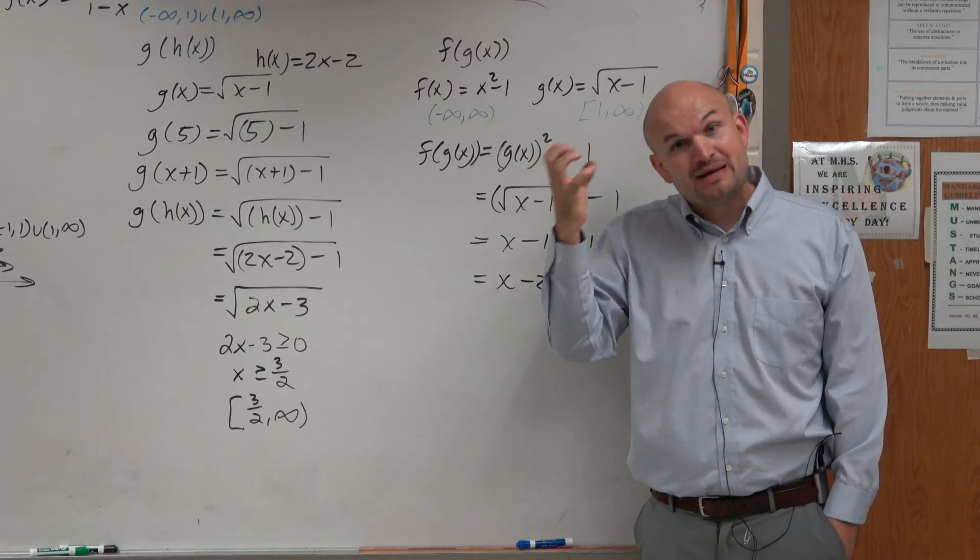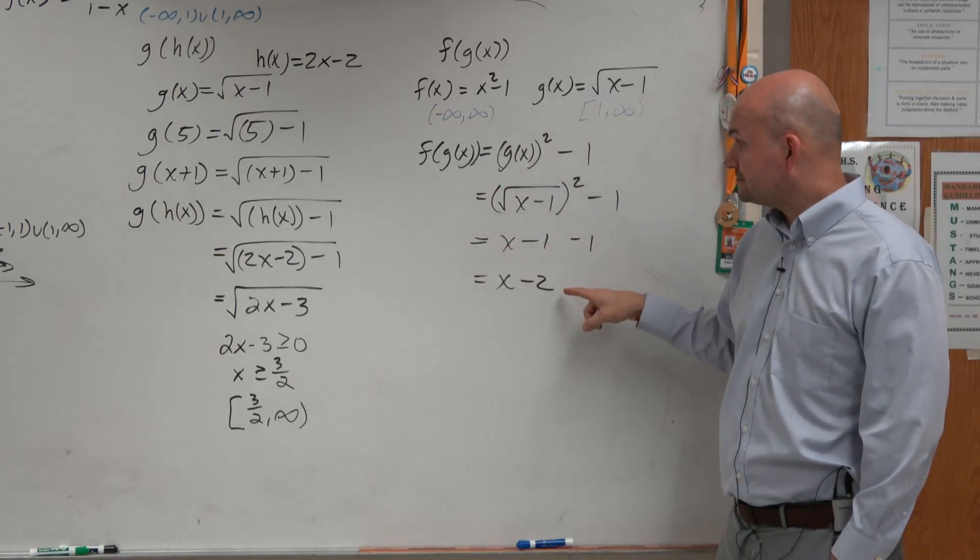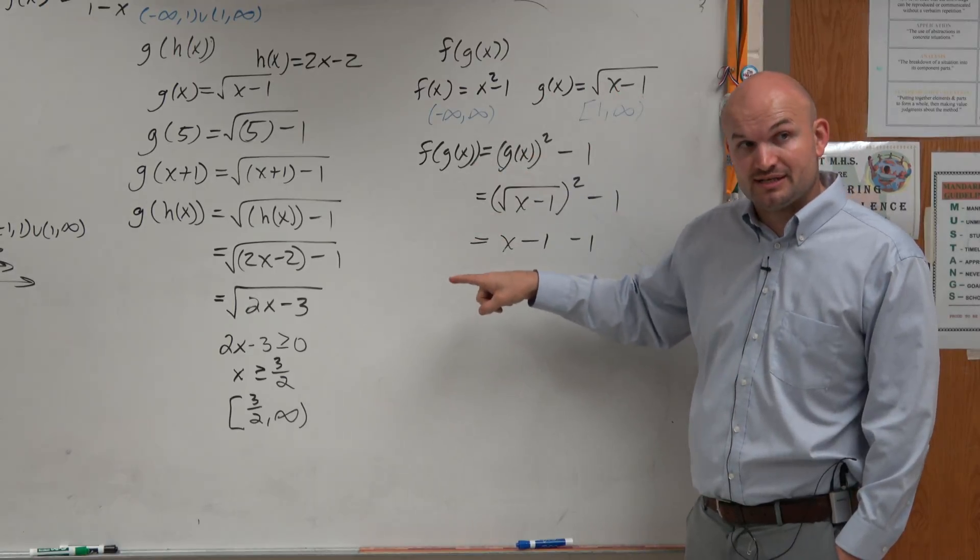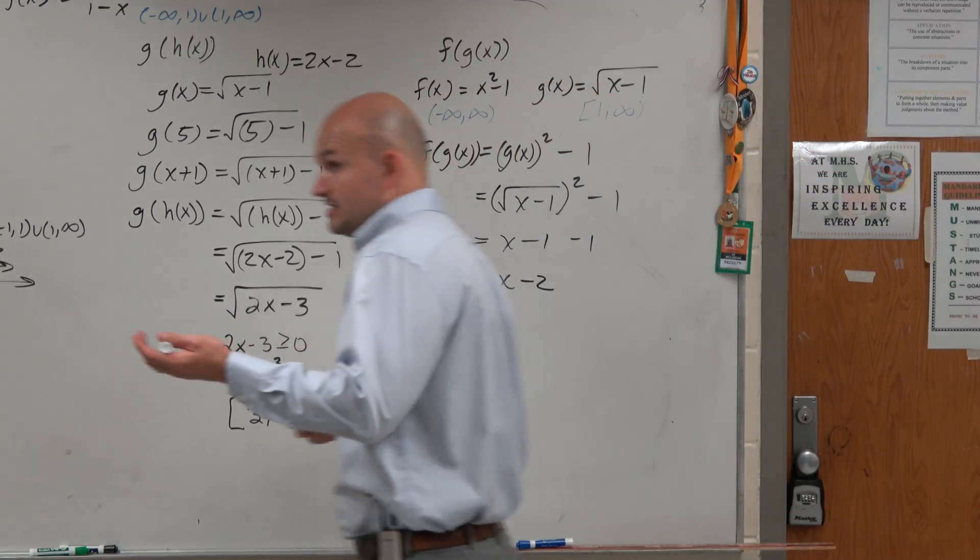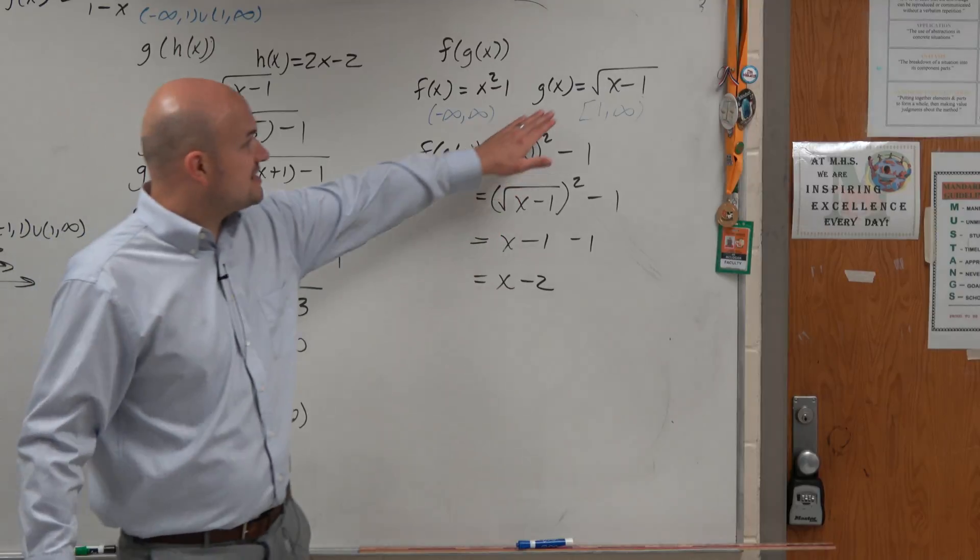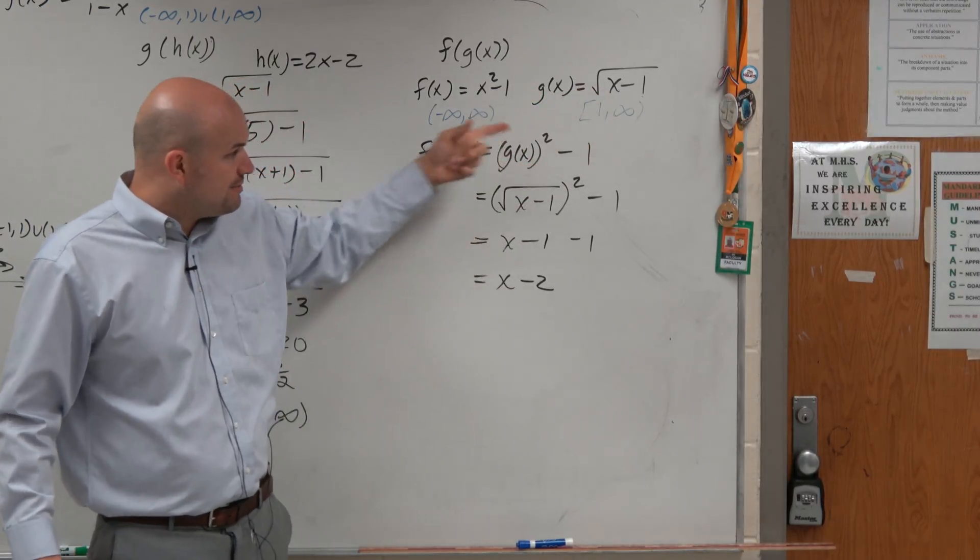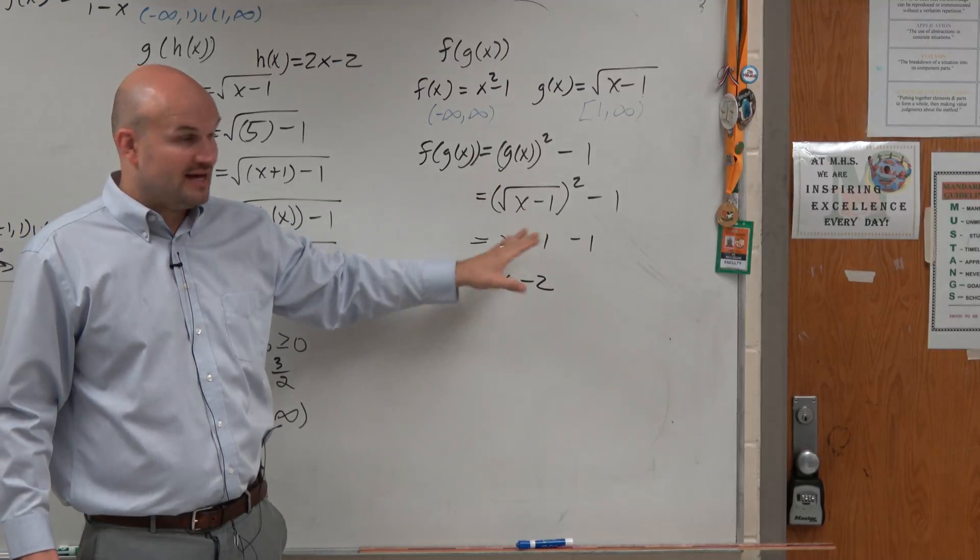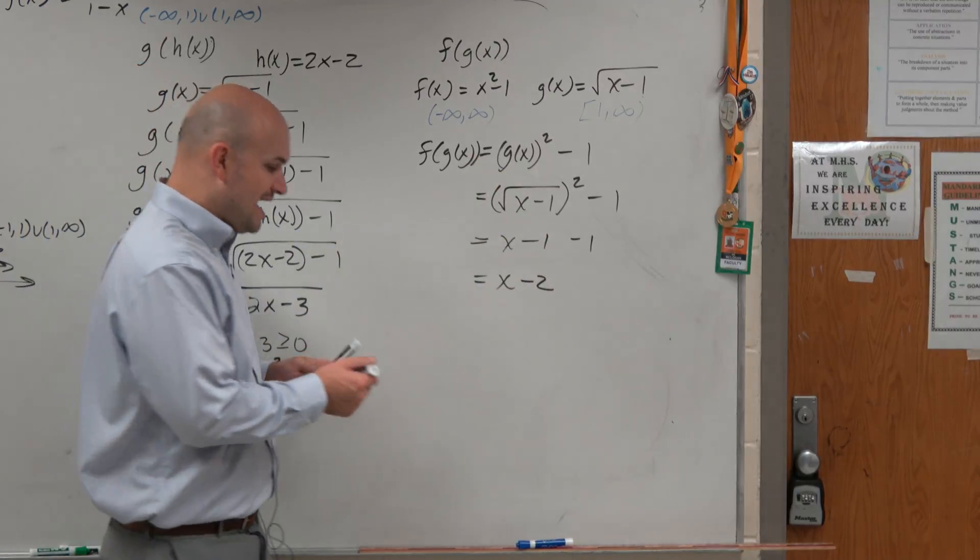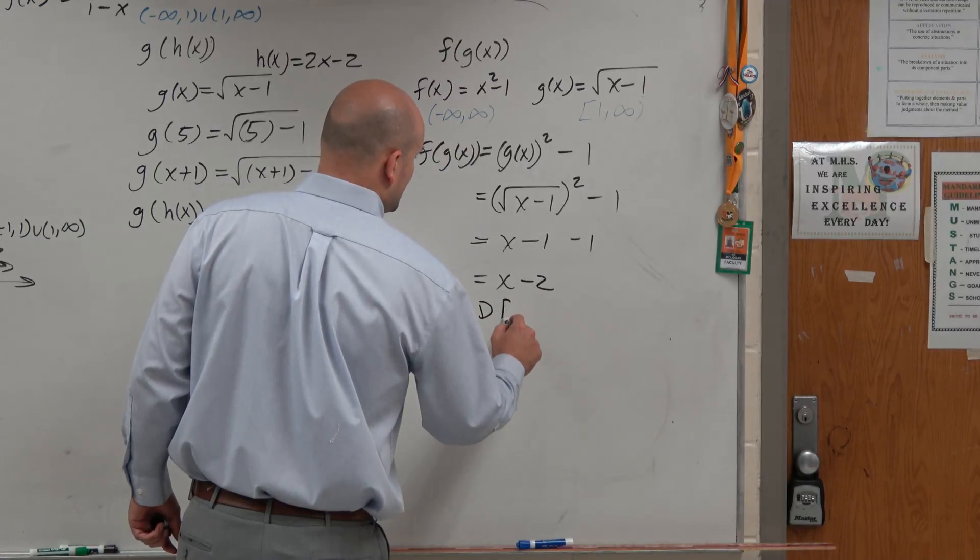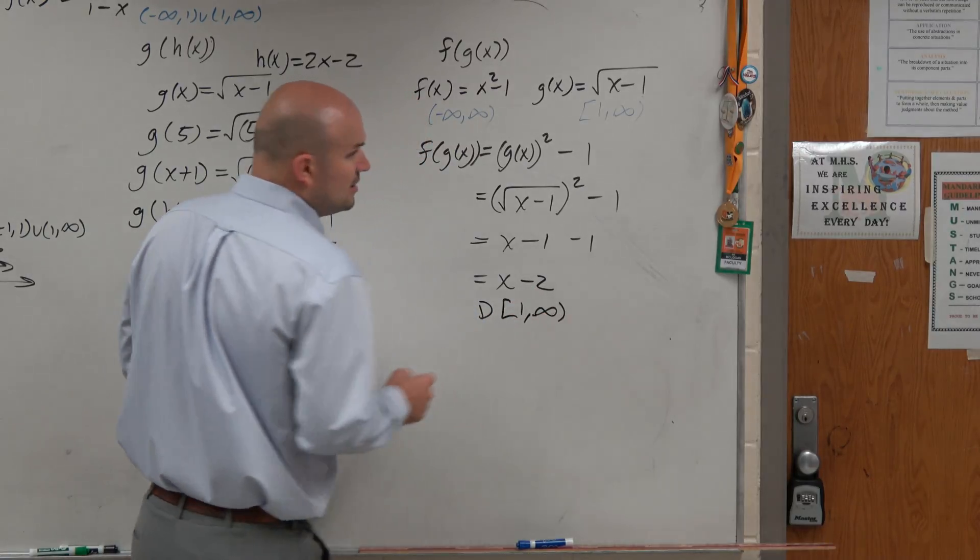Because what we have to do is we have to keep in mind our domain from our function that we plugged into this. So even though the domain looks like it's just a line, it actually is a function that is still restricted. Even though once we plugged it in and simplified it, it got simplified to this, we have to still include the domain of that original function, which is 1 to infinity.